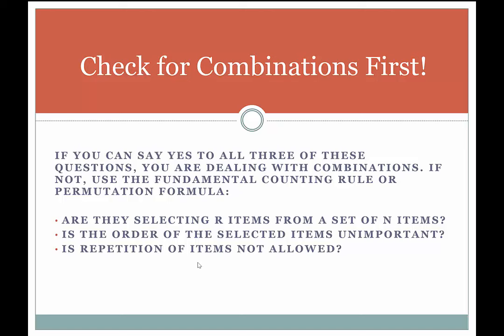Some people default to fundamental counting rule as their go-to technique, applying it to situations that are really combinations — and then miss those questions. My approach is to tell students: focus on combinations first, assume it's a combination, and try to disprove that. If you can disprove it, then fundamental counting rule should work safely. If you can't, use the combinations formula and get the problem right.